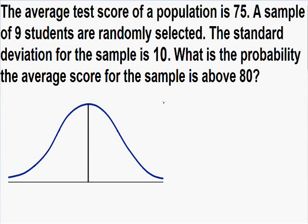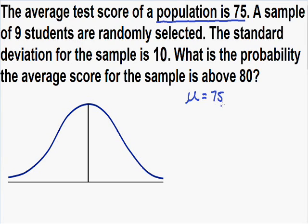Here we have a T-test example. It says that the average test score of a population is 75. We know that the average for the population, which is always written with the Greek letter mu, is equal to 75. They give us the population average, but they do not give us the population standard deviation — so the population standard deviation is unknown. It also says that a sample of nine students are randomly selected, so our sample size N is equal to nine.